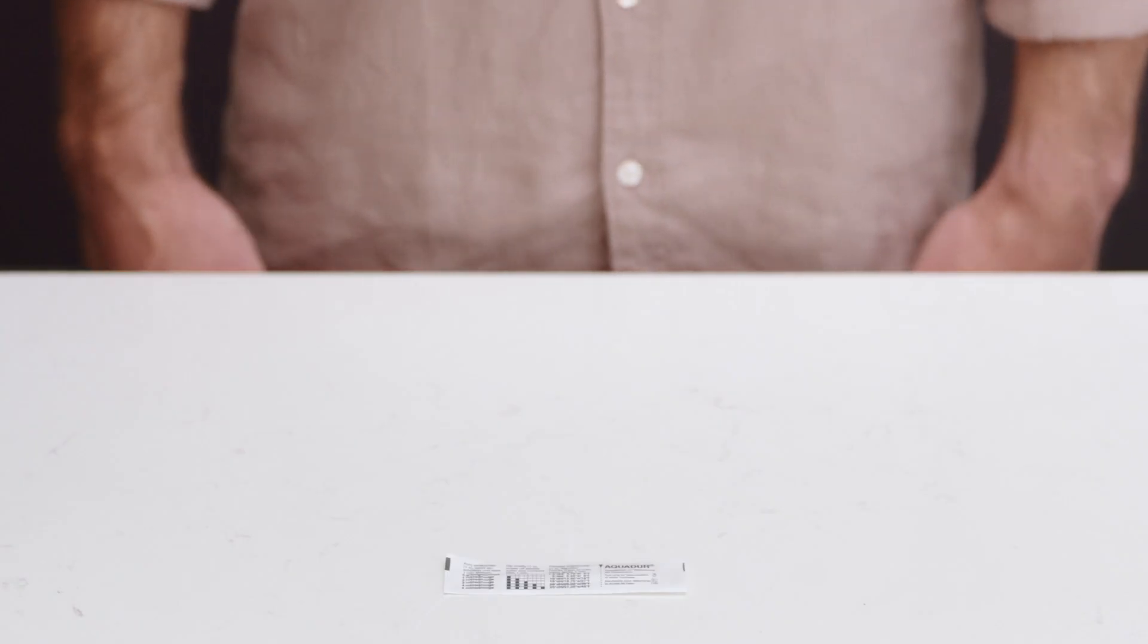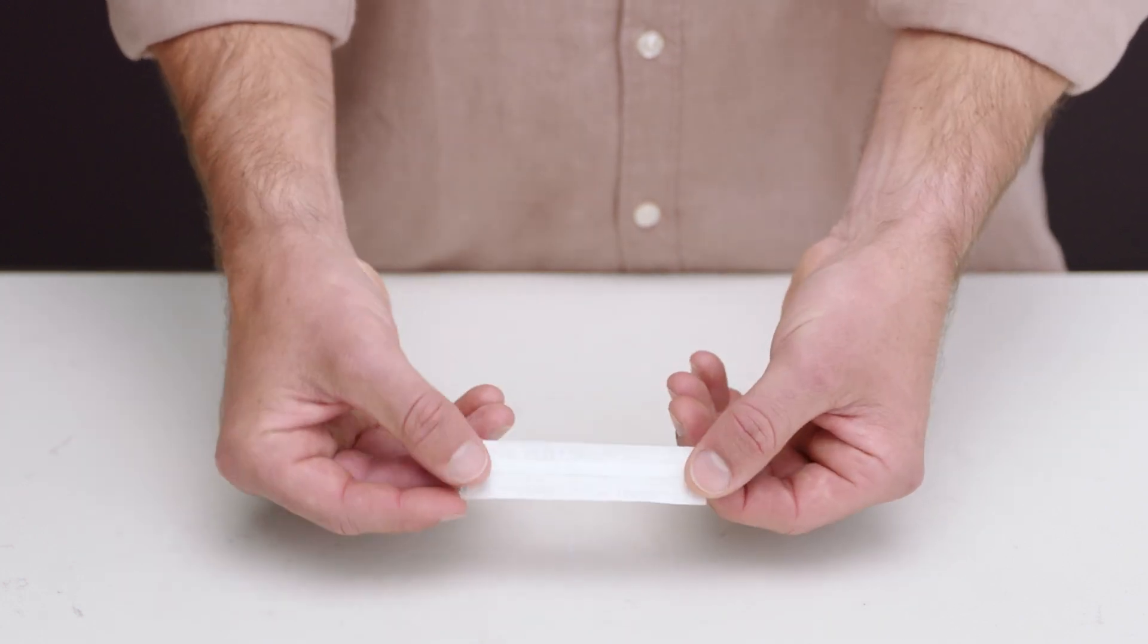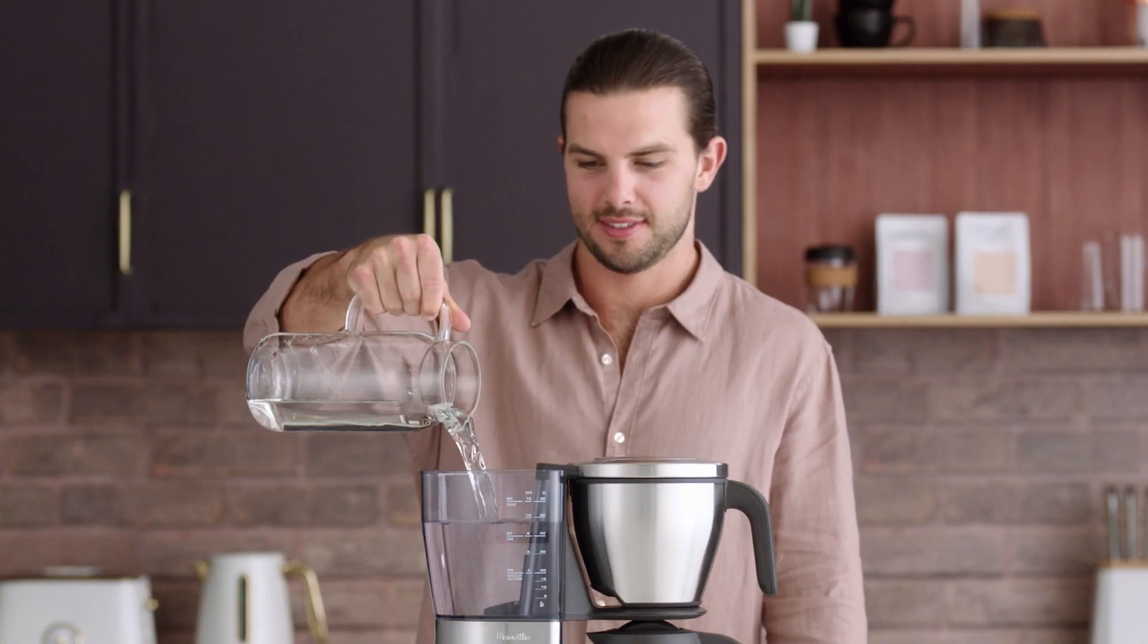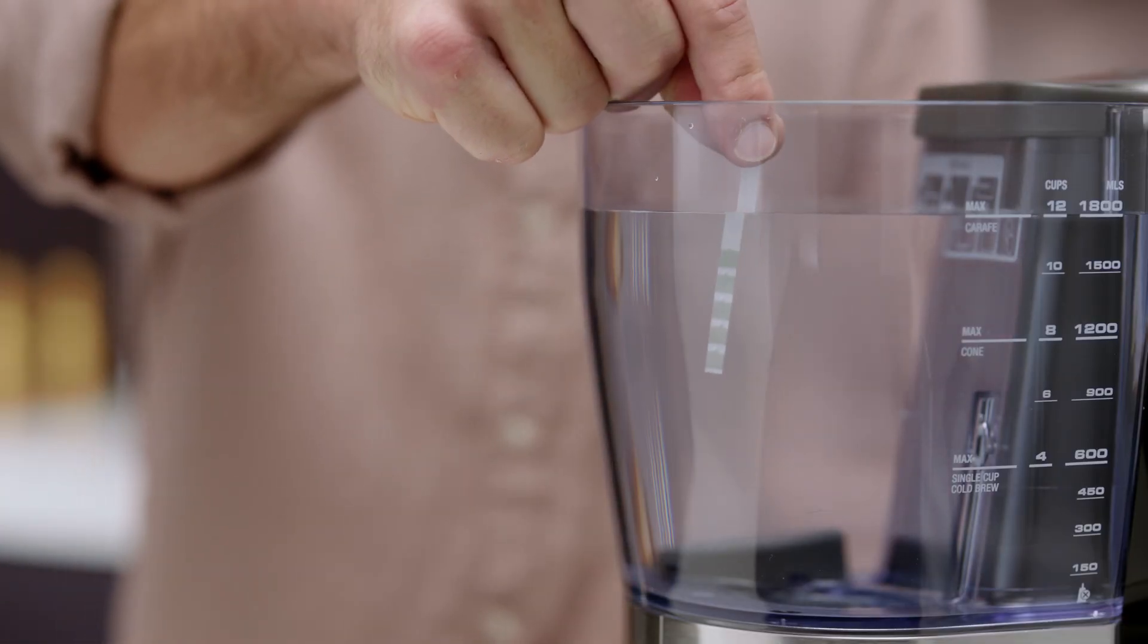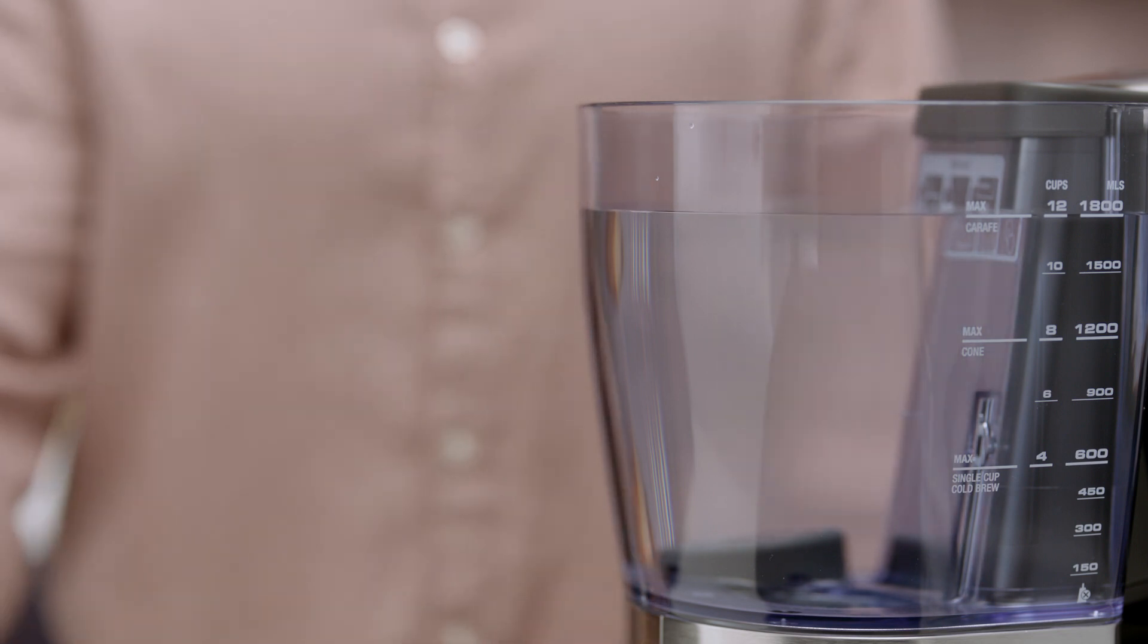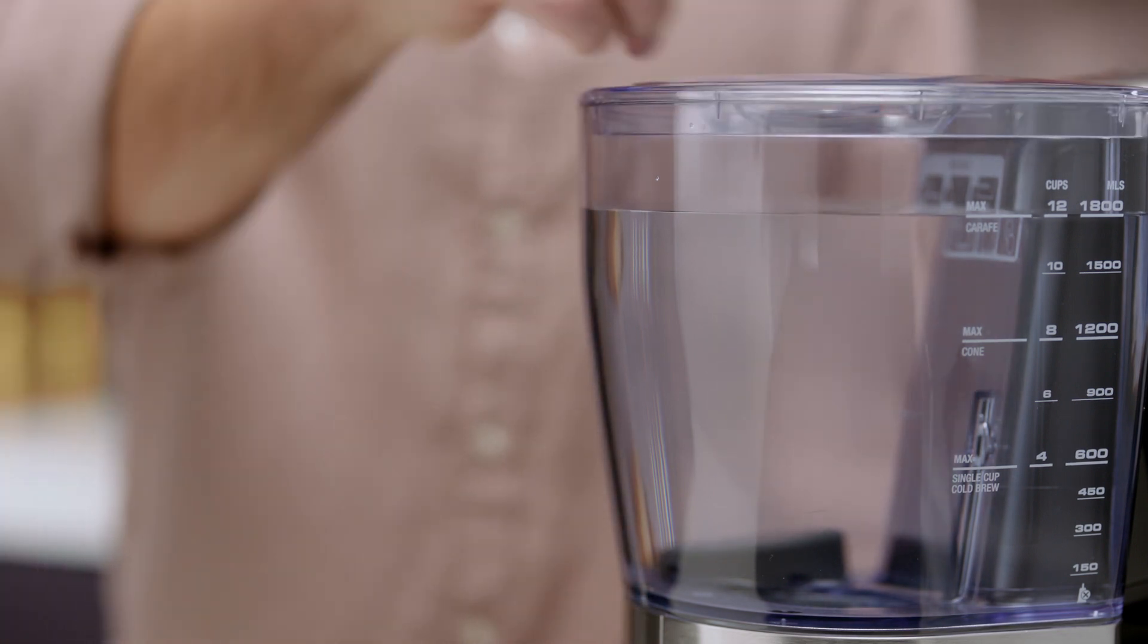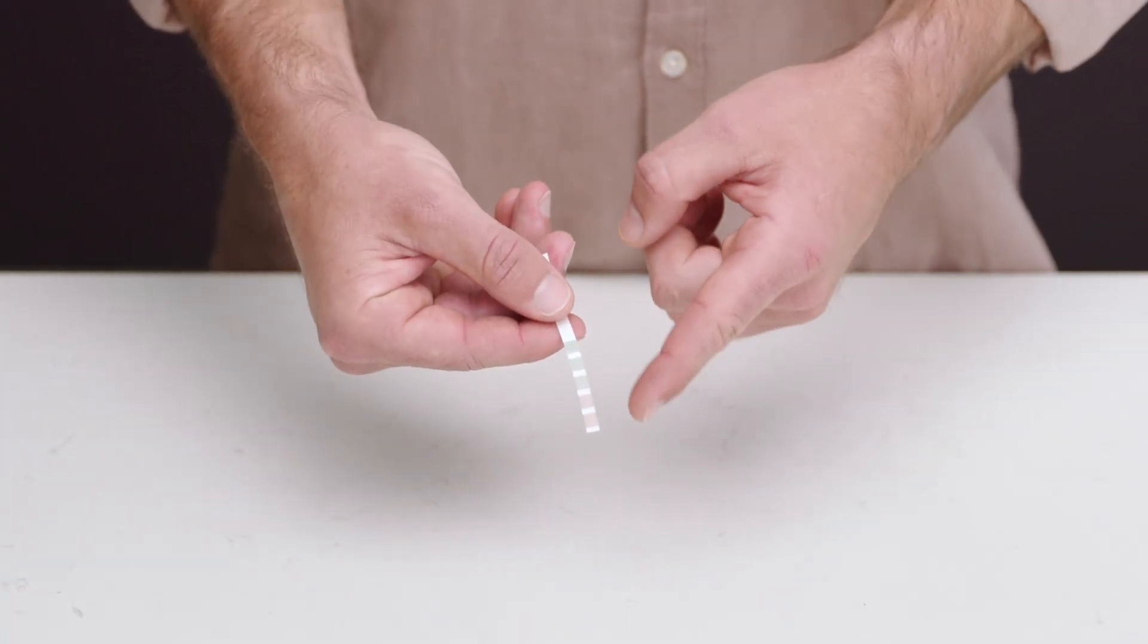Before making the first coffee, you'll need to complete the water hardness test. Fill the water tank with cold water. Dip the water hardness test strip into the water tank for one second. Remove the strip and wait for one minute to reveal the result. When the result appears on your strip, shown as red dots, you're ready to set your water hardness for the machine.